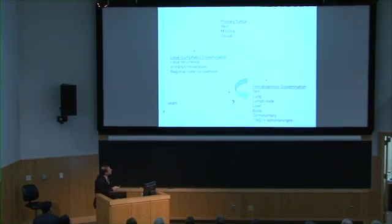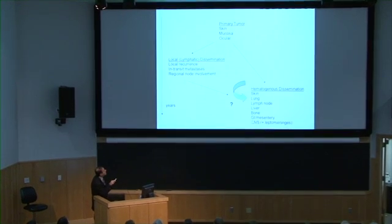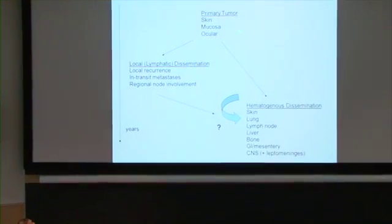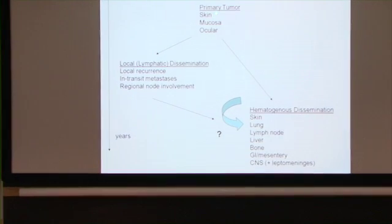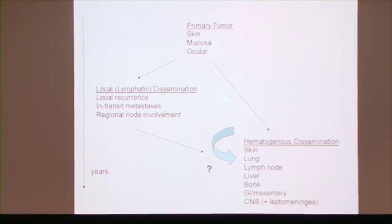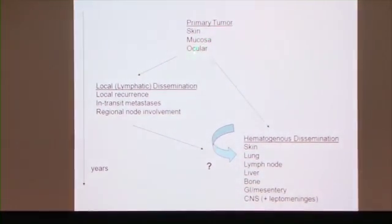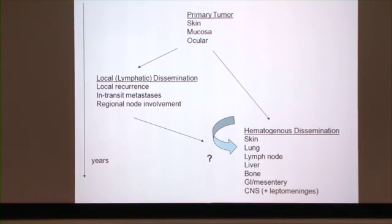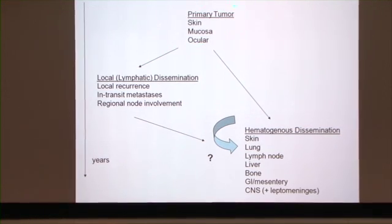We're talking about melanoma today, and there are sort of three things. There's a primary tumor — this is where the melanoma starts — and the melanoma can start on the skin, or it can start in mucosal surfaces, or it can start behind the eye. Melanoma is a disease of melanocytes, and you have melanocytes all over your body. I've had this talk with many of you in the clinic on several occasions.